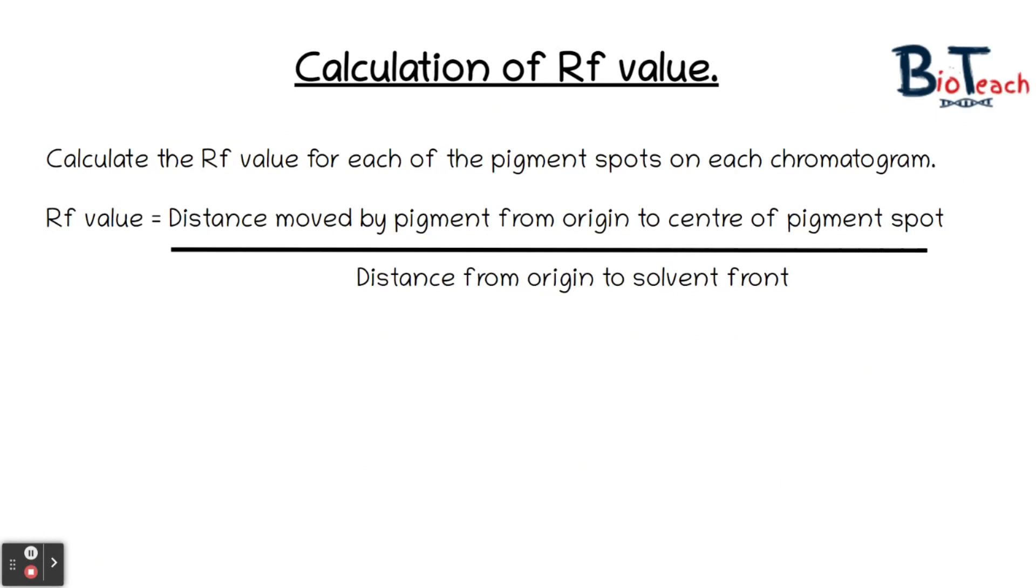Now once you've done that you can calculate the RF value. The RF value is calculated by looking at the distance that's moved by the pigment from the origin to the centre of the pigment spot and measuring the distance from the origin to the solvent front. By using those two numbers, dividing the top by the bottom, you can calculate a numerical value which is known as the retention factor or the RF value.